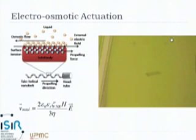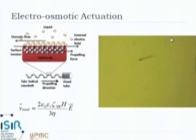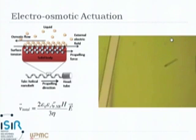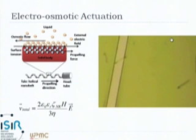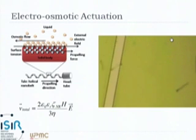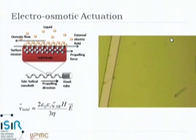In this layer you have the counter-ions of the liquid medium coming inside to screen this diffuse layer. The movement of these counter-ions applies a hydrodynamic pressure around the surfaces on this Stern layer, which is around 10 nanometers thick, and this hydrodynamic pressure makes our little guy swim around.